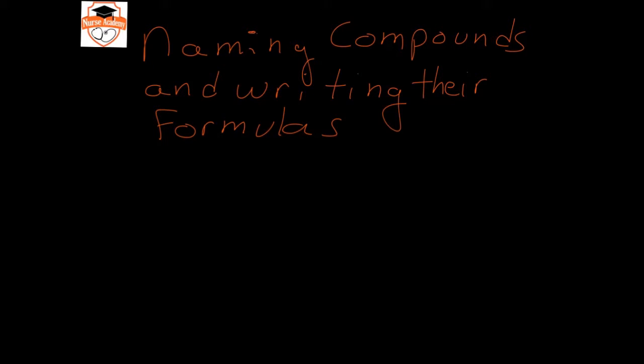In this video, we're going to go over naming simple compounds and writing their formulas. There are two main types of naming systems in early chemistry. There is a system that we use for ionic compounds, and there's a system that we use for covalent compounds.